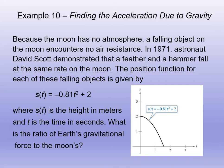So let's do an example here. We're going to find acceleration due to gravity, a real life type problem. Since we know the moon does not have an atmosphere, we're going to read through this problem here. A falling object on the moon encounters no air resistance. So in 1971, astronaut David Scott demonstrated that a feather and a hammer fall at the same rate on the moon.